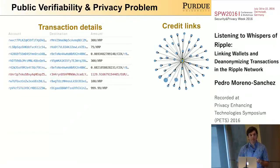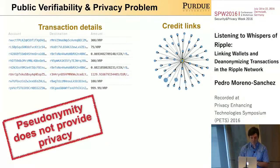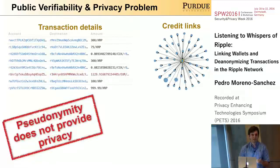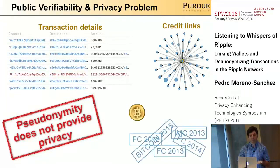Accounts in Ripple are represented by a pseudonym. As we know, pseudonymity doesn't really give privacy. Given one pseudonym, it's possible to reconstruct all the transactions performed by that pseudonym. Therefore, we have what is called linkable anonymity. In the Bitcoin world, it has been shown that linkable anonymity is prone to de-anonymization attacks.